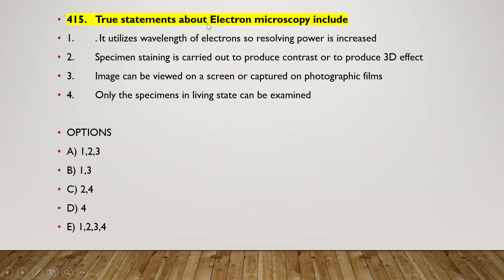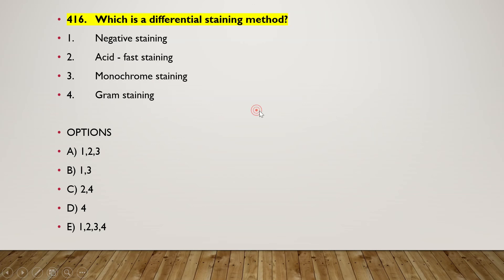Next question: true statements about electron microscopy include — (1) it utilizes wavelength of electrons so resolving power is increased, (2) specimen staining is carried out to produce contrast, (3) to produce 3D effect image can be viewed on a screen or captured on photographic film, (4) only specimens in living state can be examined. The right answer is option A — the first three options are correct.